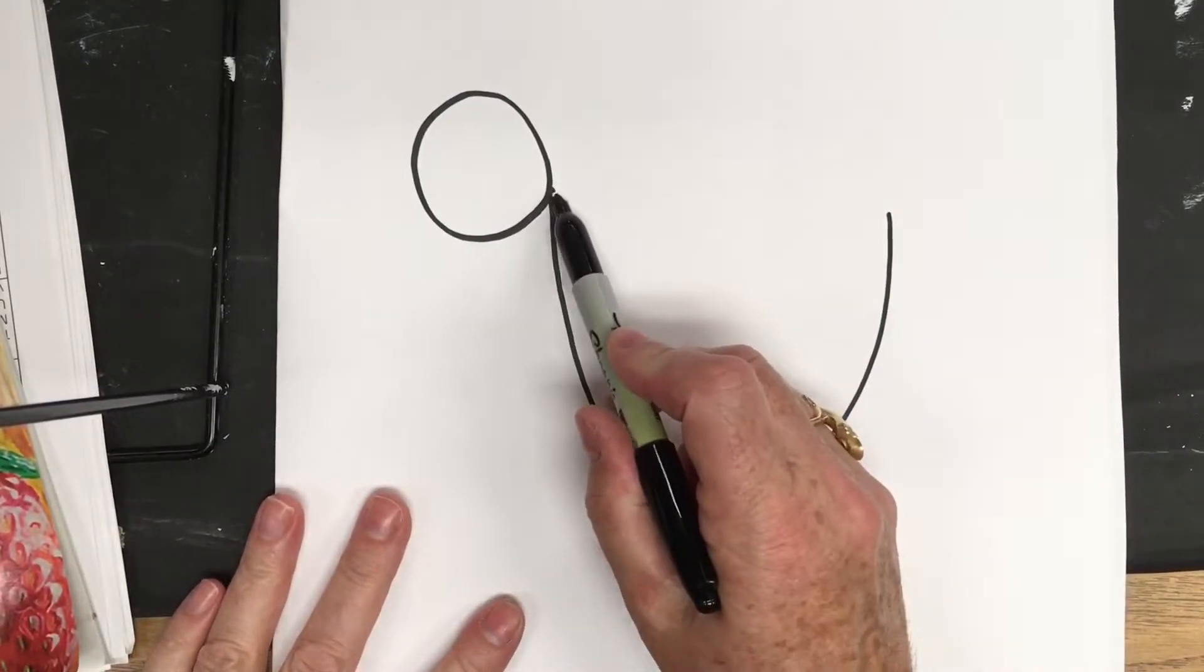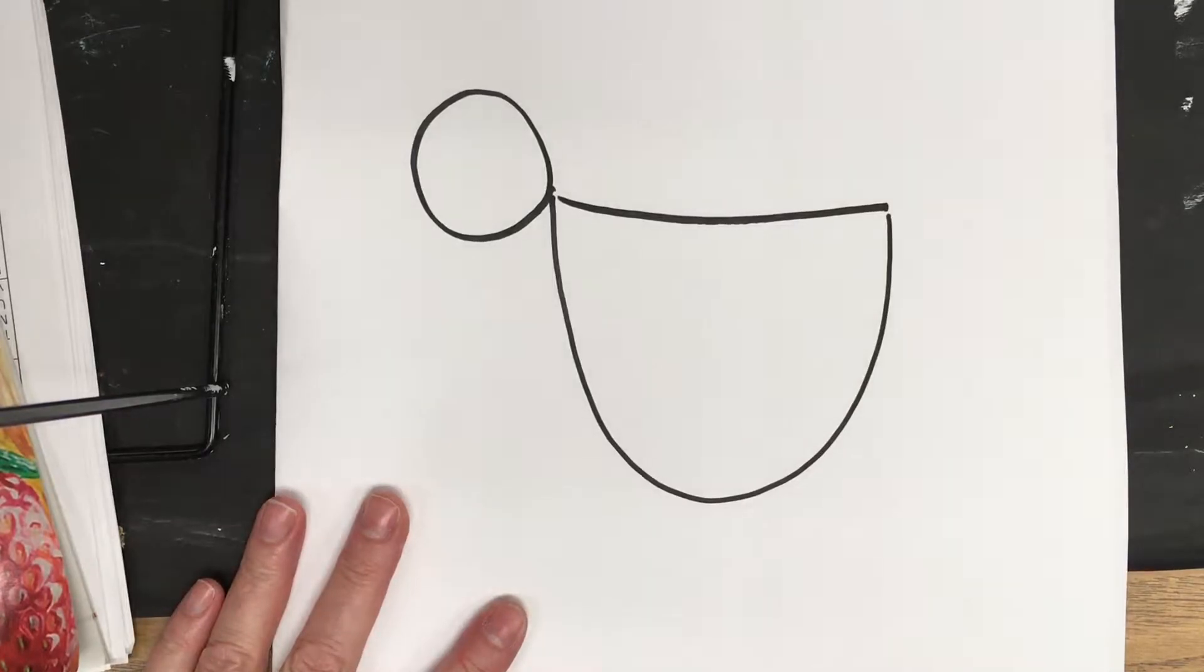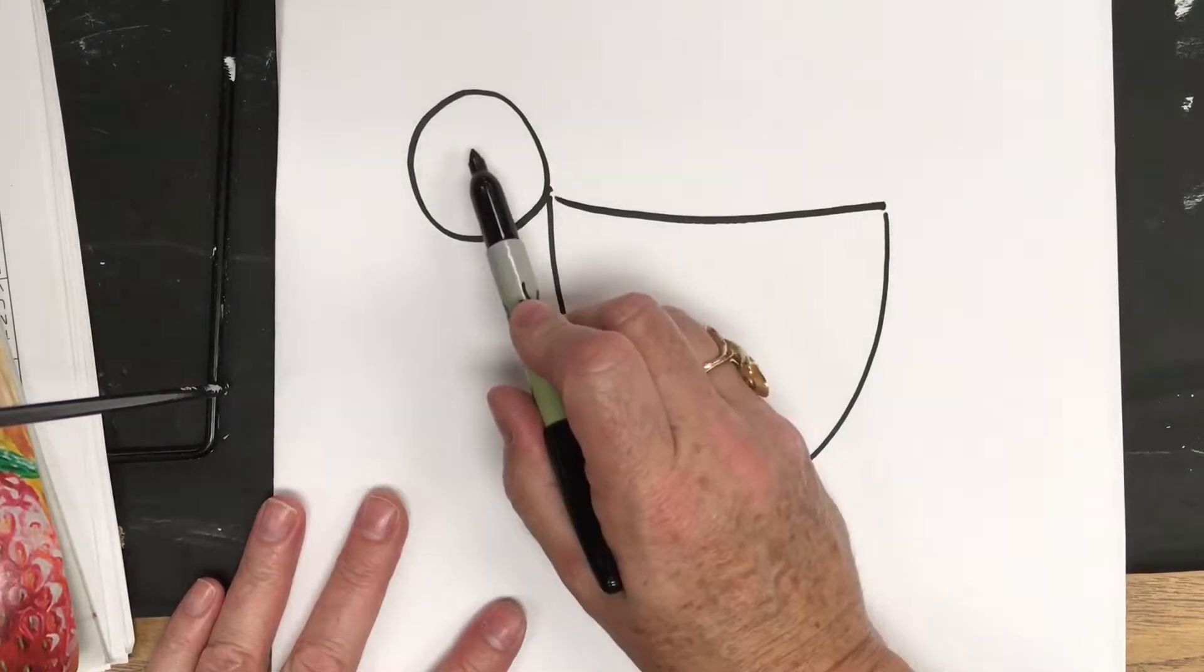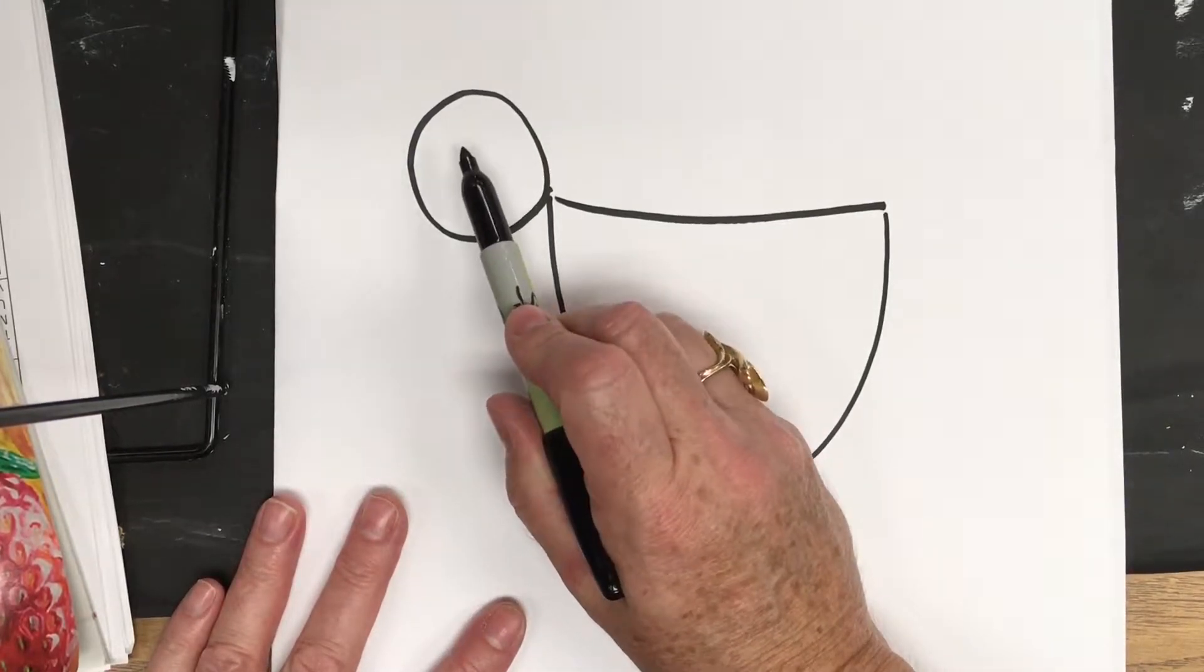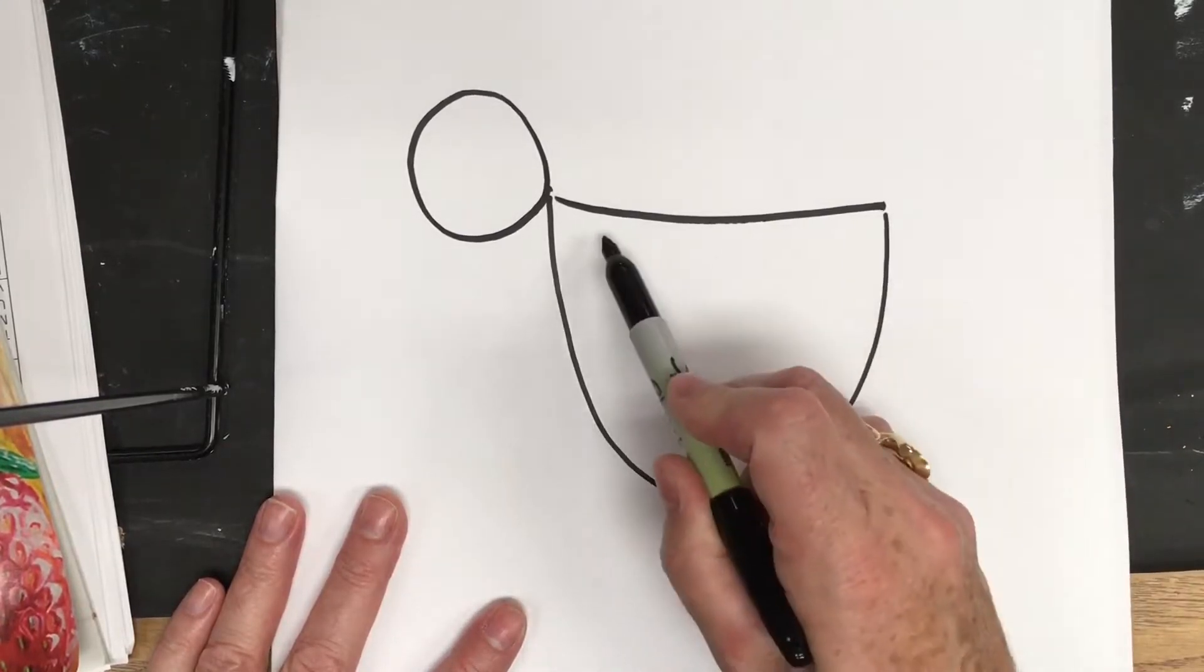Now we're going to connect with a straight line. This will form the turkey's head. This will form its body.